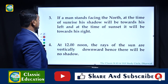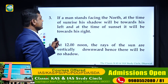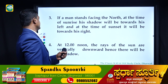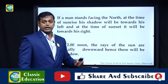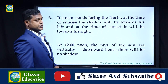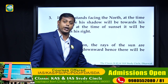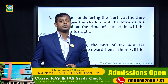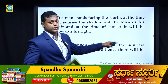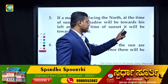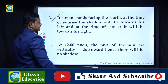Point three: if a man stands facing north at the time of sunrise, his shadow will be towards his left. At the time of sunset, it will be towards his right. When facing north and the sun rises in the east, the shadow falls to the left side. At sunset, with the sun in the west, the shadow falls to the right side.